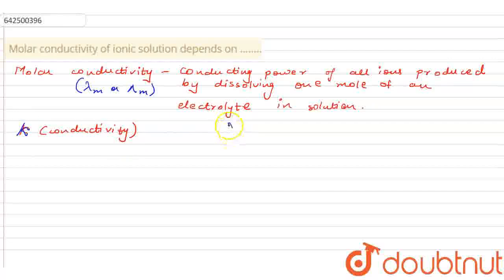Now, how are they related? Let us have a look at this expression. Lambda M is equal to kappa upon C, capital C, which is nothing but the concentration of the given solution, which can also be written in the form of volume. So kappa into volume given in centimeter cube would also be lambda M, that is molar conductivity.